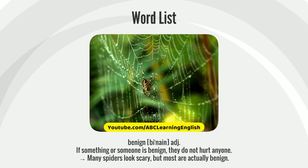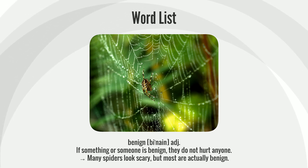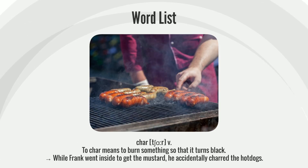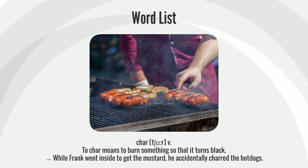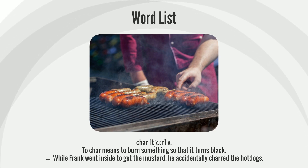Benign: If something or someone is benign, they do not hurt anyone. Many spiders look scary, but most are actually benign. Char: To char means to burn something so that it turns black. While Frank went inside to get the mustard, he accidentally charred the hot dogs.